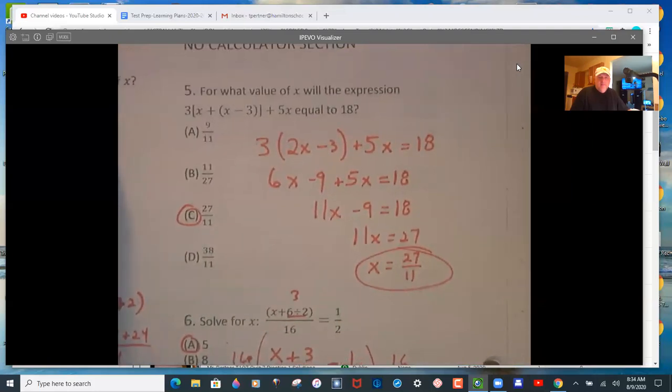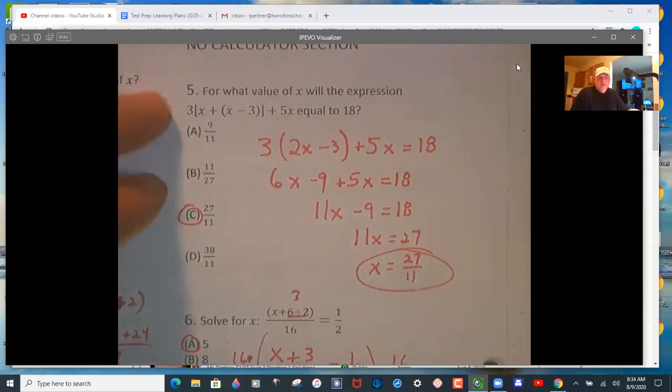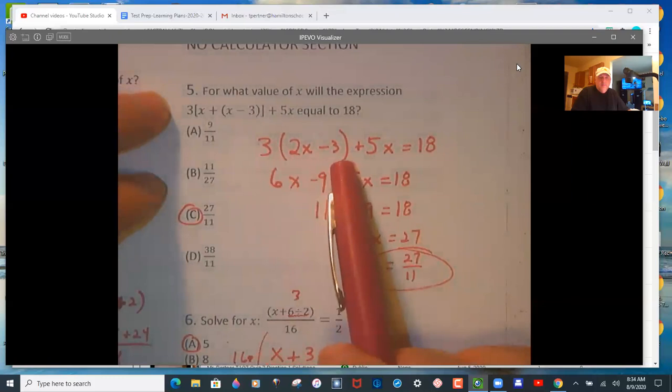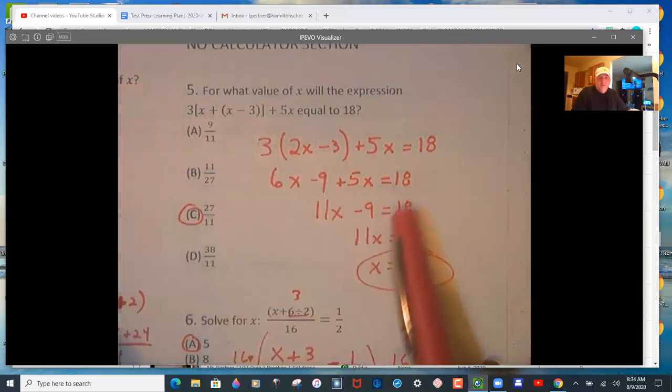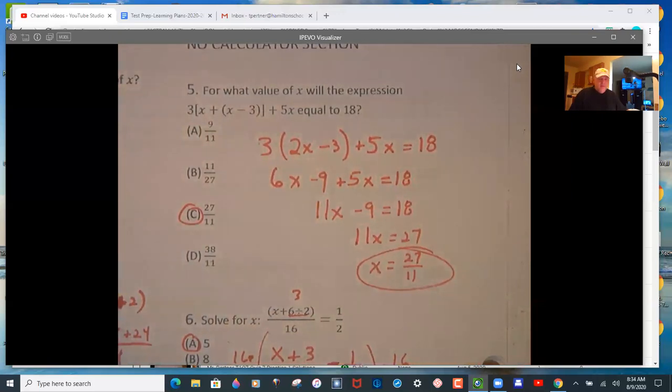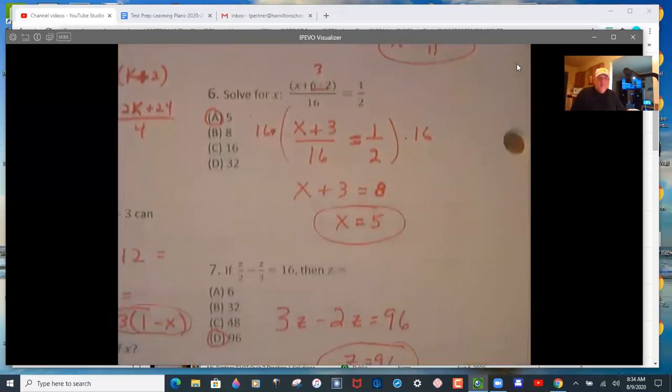Number 5, again distribute there, make the brackets, parentheses, or simplify inside first there. And then combine like terms. And you'll see that you have 27 over 11.